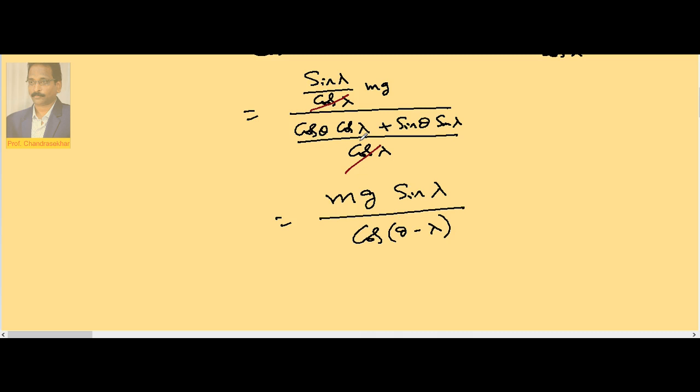Because cos A cos B plus sin A sin B is cos of A minus B. So, this is the minimum force required in terms of angles of friction.